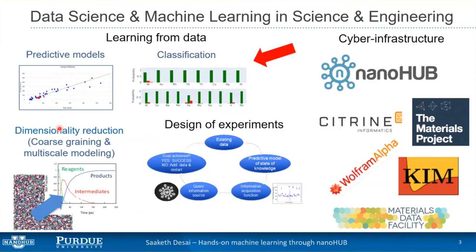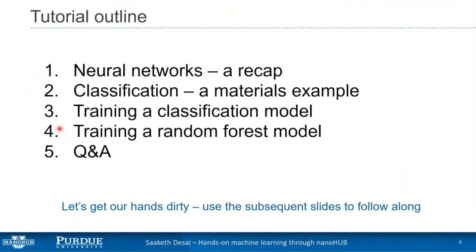For the random forest part, we will also use citrination to get some data as our example. That's the plan for today. We'll briefly recap neural networks, build on our knowledge from last time where we looked at neural networks for regression, extend that to classification, and then move on to random forests.